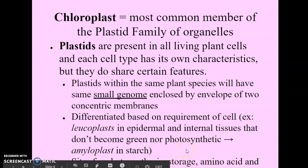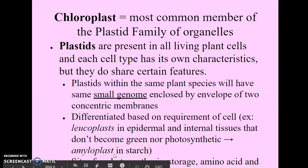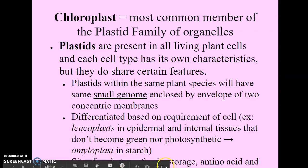Plastids are differentiated based on the requirement of the cell. For example, a leukoplast is a type of plastid typically found in epidermal or internal tissues of the plant — leukoplasts don't become green, so they don't perform photosynthesis. A type of leukoplast would be an amyloplast, found in starch, and their main function is storage of excess sugars. In conclusion, plastids can have a few different functions: they can be the site of photosynthesis, the site for storage like the amyloplast, or the site for other macromolecule synthesis such as amino acid and fatty acid synthesis.